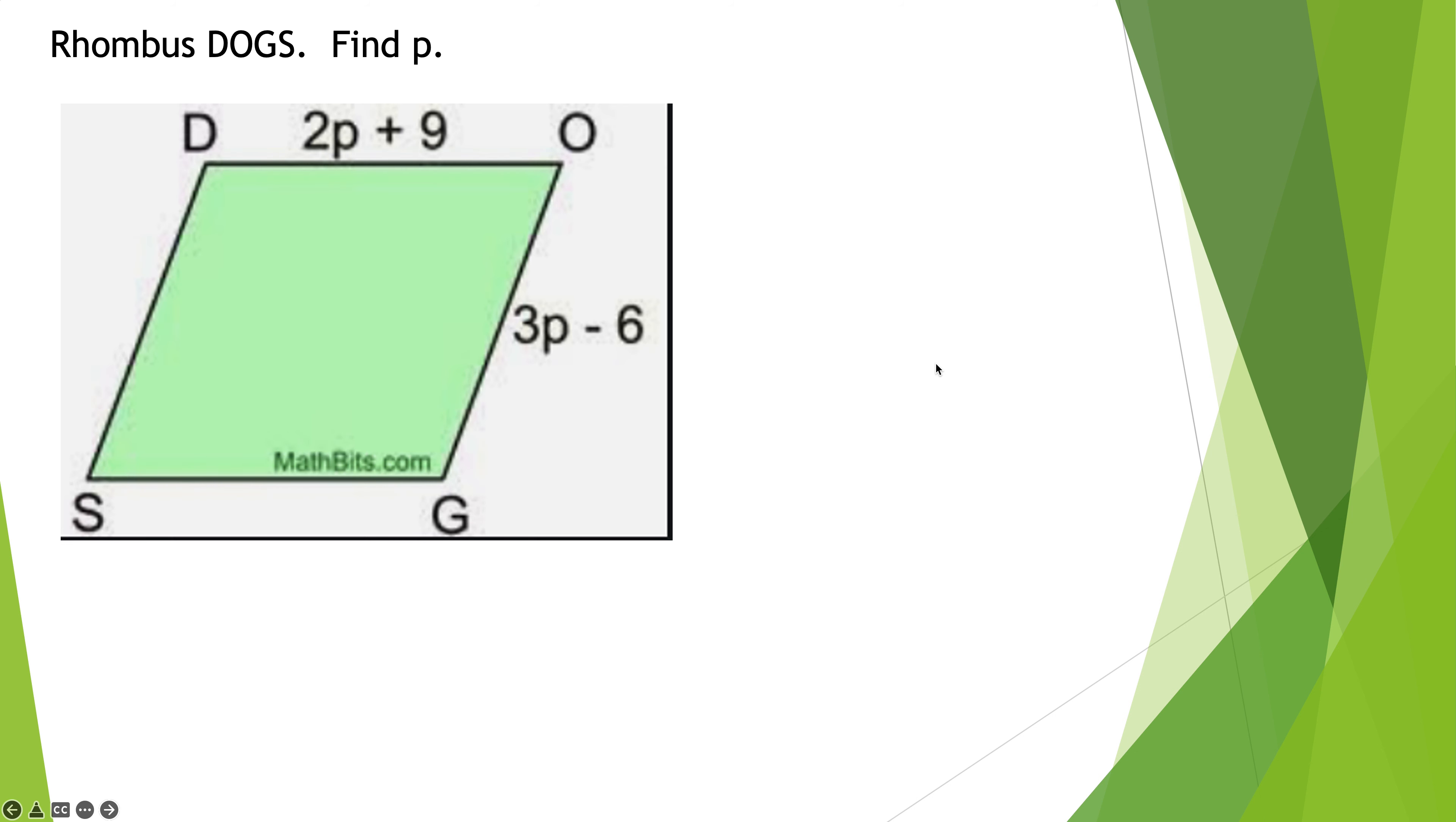So, let's take a look at this first question. Rhombus DOGS. Yes, rhombus dogs. Find P. Well, first you might say, I can't do that. They're not across from each other. Doesn't matter with a rhombus. All four sides are the same. So, that means 3P minus 6 is equal to 2P plus 9. Opposite side, opposite operation. Subtracting the 2P from both sides. P minus 6 is 9. Adding 6 to both sides. P is equal to 15. Found my P.